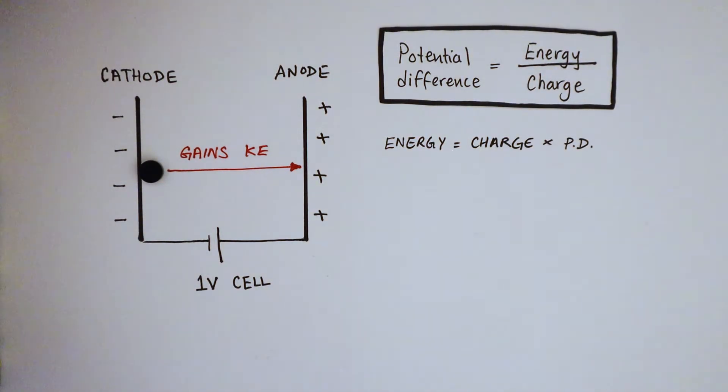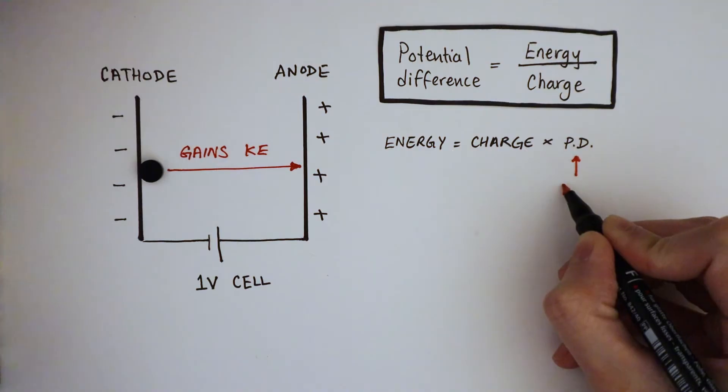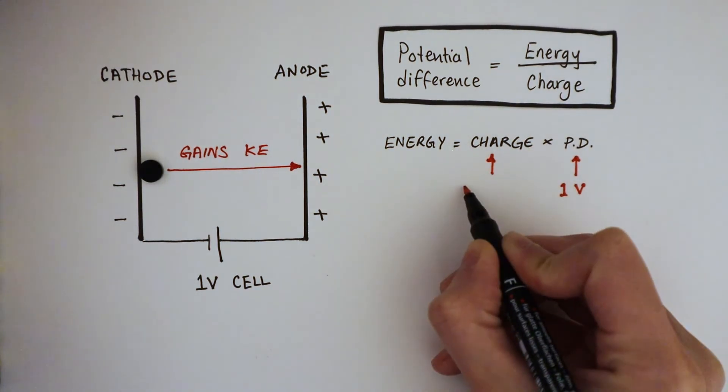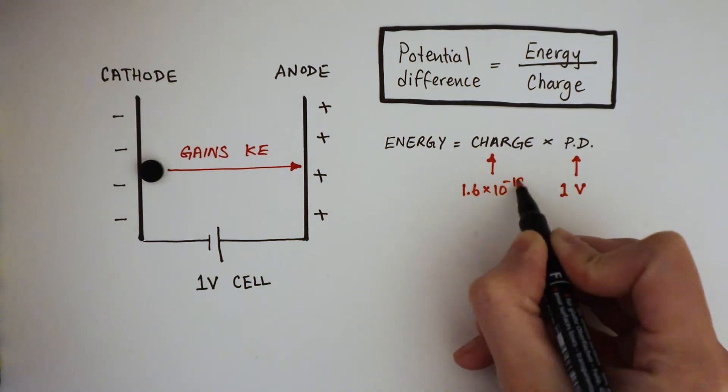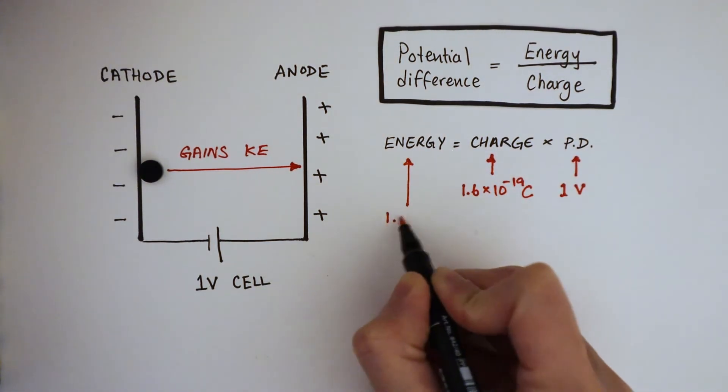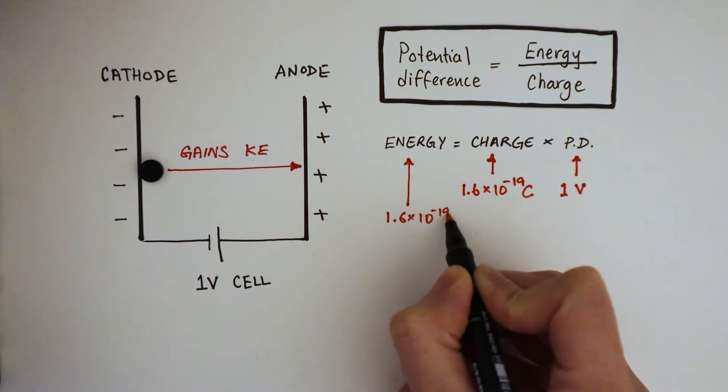In this setup right here, the potential difference is just 1 volt, and the charge on an electron is always 1.6 times 10 to the minus 19 coulombs. This calculation gives an energy of 1.6 times 10 to the minus 19 joules.